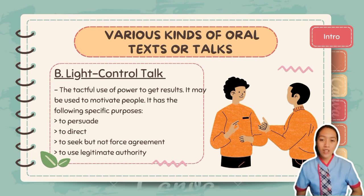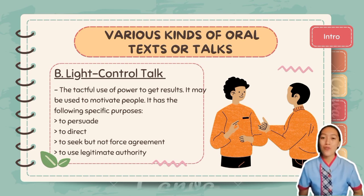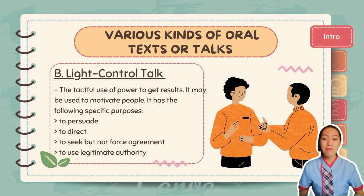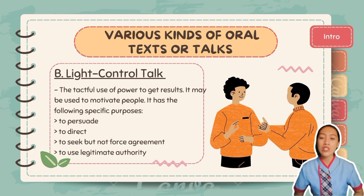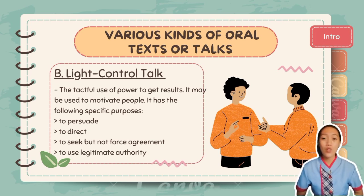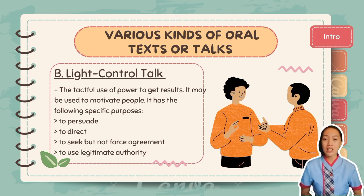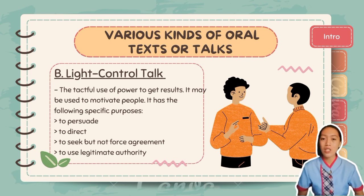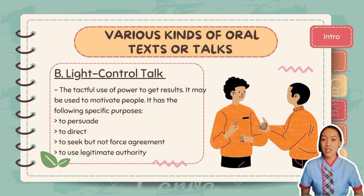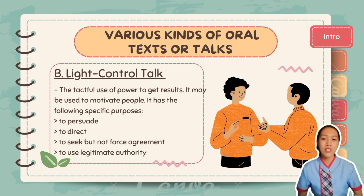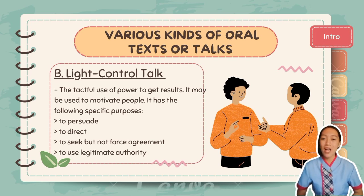The next kind of oral text is light control talk. Light control talk is the tactful use of power to get results and may be used to motivate others. Tact means saying the right thing at the right time. It is a kind of talk where you speak in a respectful and supportive manner that considers the feelings of others. It controls behavior in a good way without invalidating others' feelings, and creates a positive environment. Light control talk has the following specific purposes: to persuade, to direct, to seek but not force agreement, and to use legitimate authority.